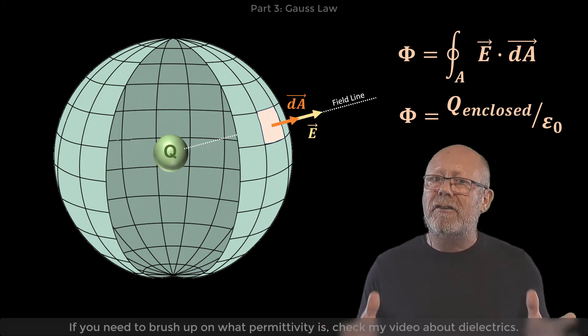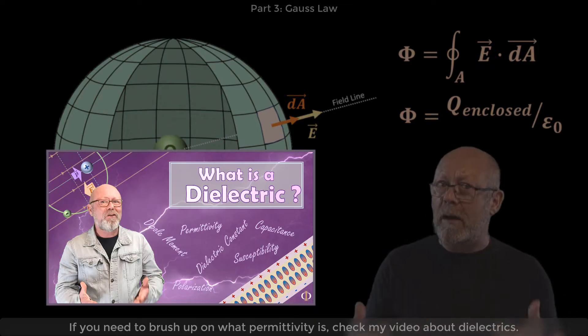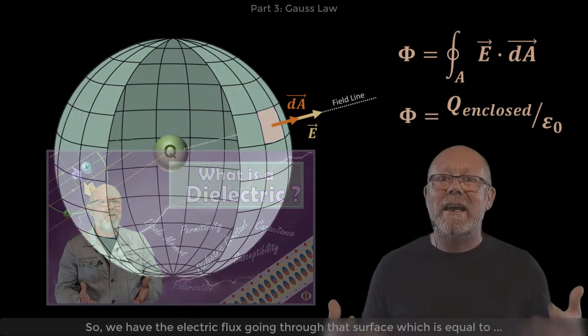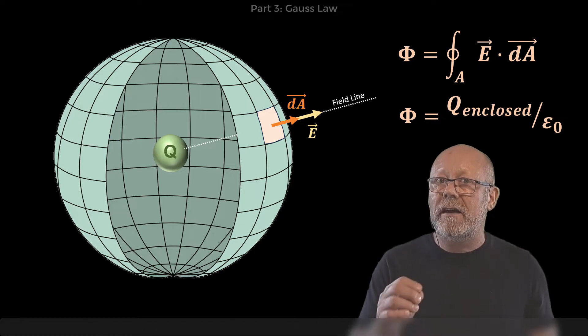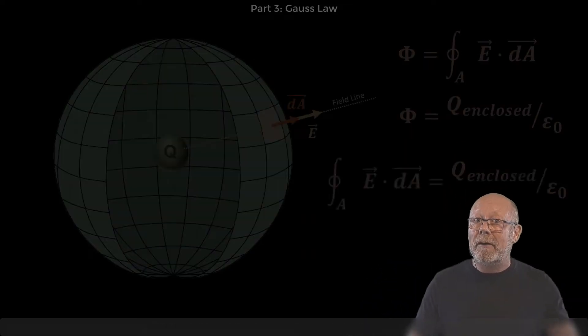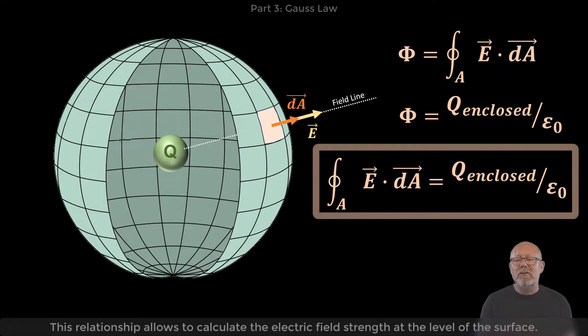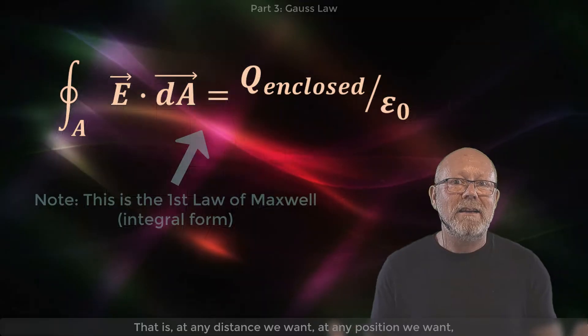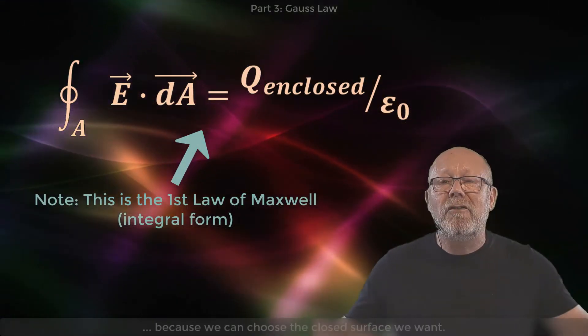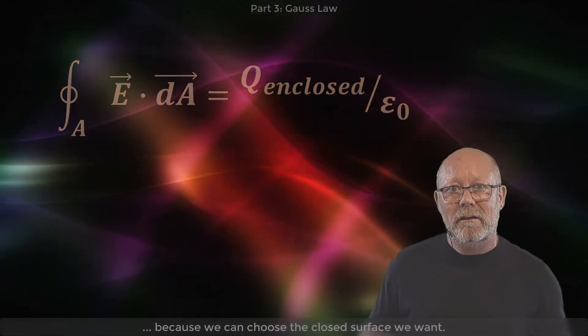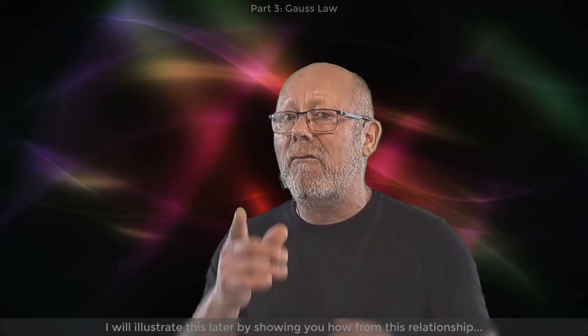If you need to brush up on what permittivity is, check my video about dielectrics. So we have the electric flux through that surface, which is equal to the integral of the dot product between E and dA, but also equal to the charge enclosed divided by a constant, the permittivity of vacuum. This relationship allows us to calculate the electric field strength at the level of the surface, that is, at any distance we want, any position we want, because we can choose the surface we want. I will illustrate this later by showing you how from this relationship we can derive Coulomb's law.